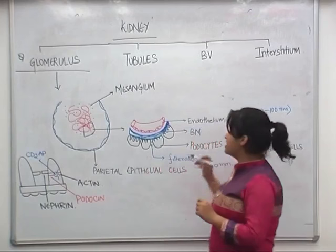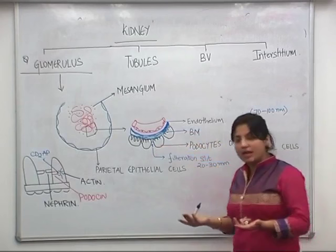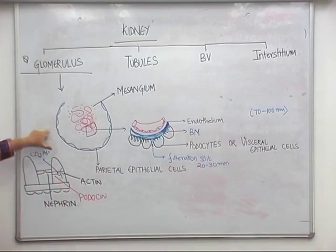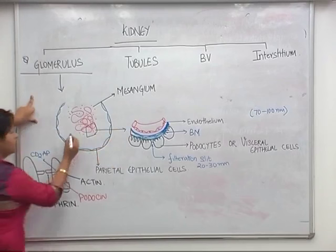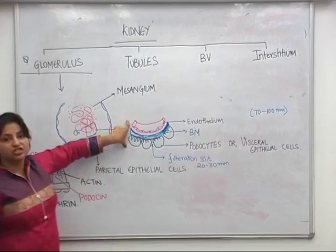If visceral epithelial cells are present just outside the basement membrane, what is the location of parietal epithelial cells? Parietal epithelial cells line the Bowman's capsule. So visceral epithelial cells are on the inner side and parietal epithelial cells are on the outer Bowman's capsule - they do not form part of the filtration barrier.